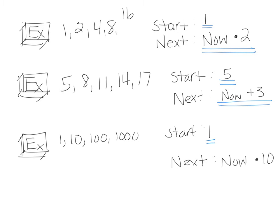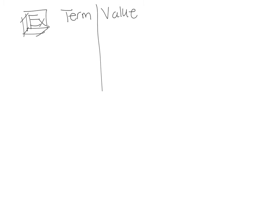Now let's move on to the next kind — the kind we got stuck on in class. We have a term and then we have the value, similar to having your X and Y axis. Let's say the term is 1, 2, 3, 4, 5, and the Y value is 5, 8, 11, 14, and 17. On the term side it's increasing by 1 every time; on the value side it's increasing by 3 every time. Let's go ahead and do our recursive statement first.